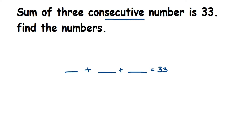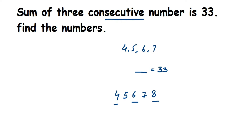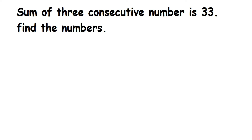What are consecutive numbers? Consecutive numbers are the ones that come immediately next — for example, the consecutive numbers of 4 are 4, 5, 6, 7. You cannot skip any number in between; for example, 4, 6, 8 are not consecutive because 5 and 7 are missing. Consecutive means one just after the other, and it can start from any number, like 100, 101, 102, and so on.